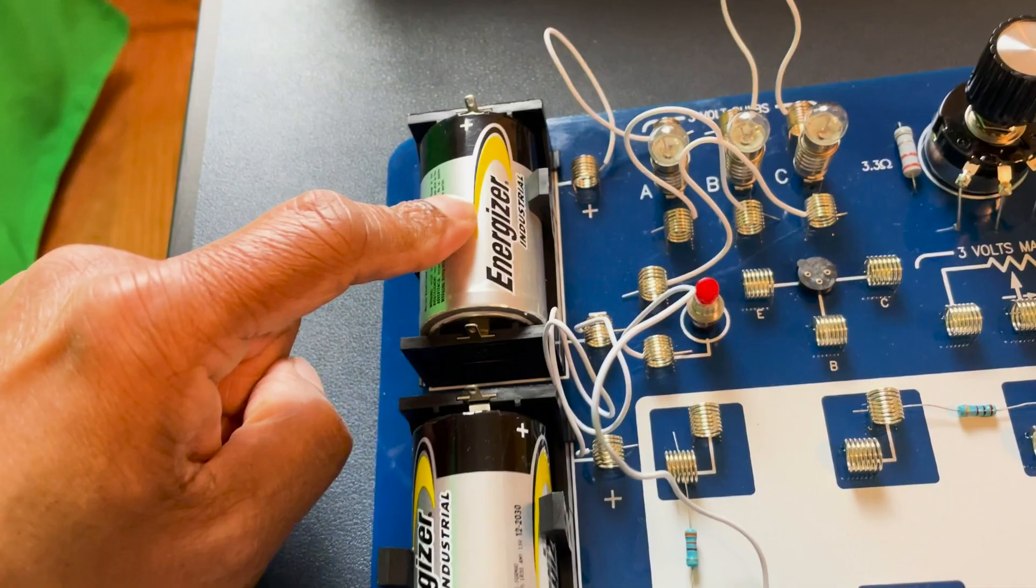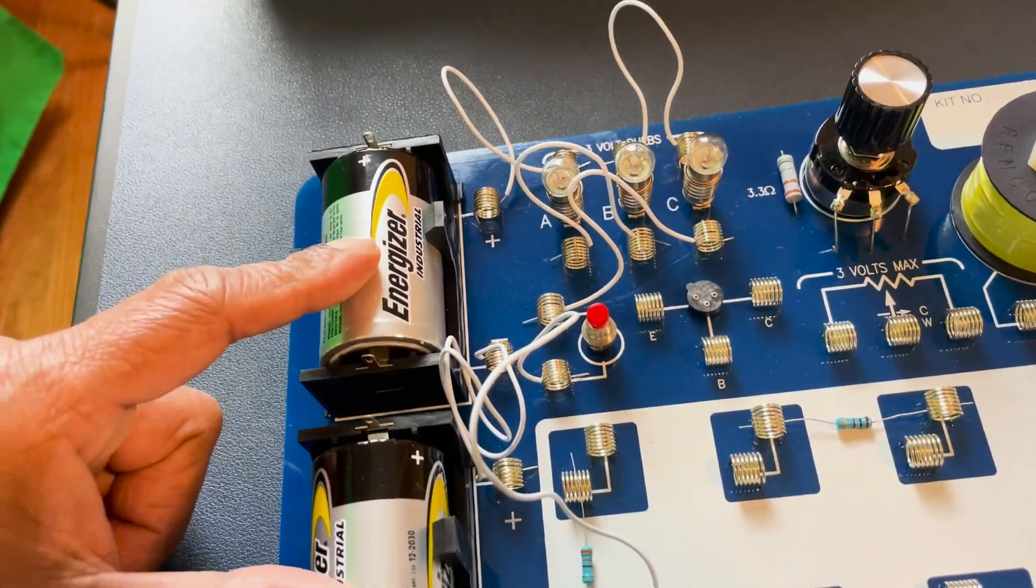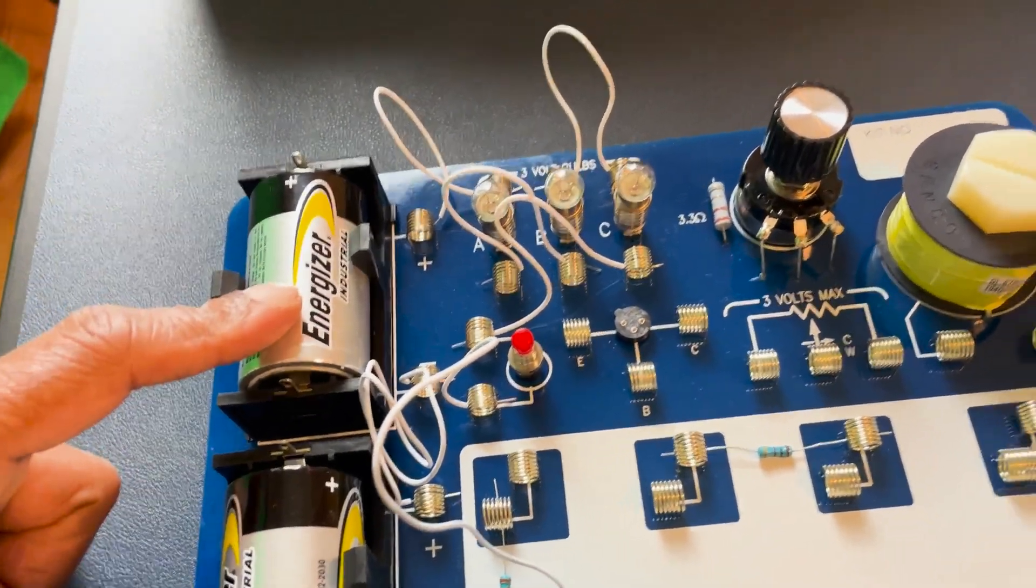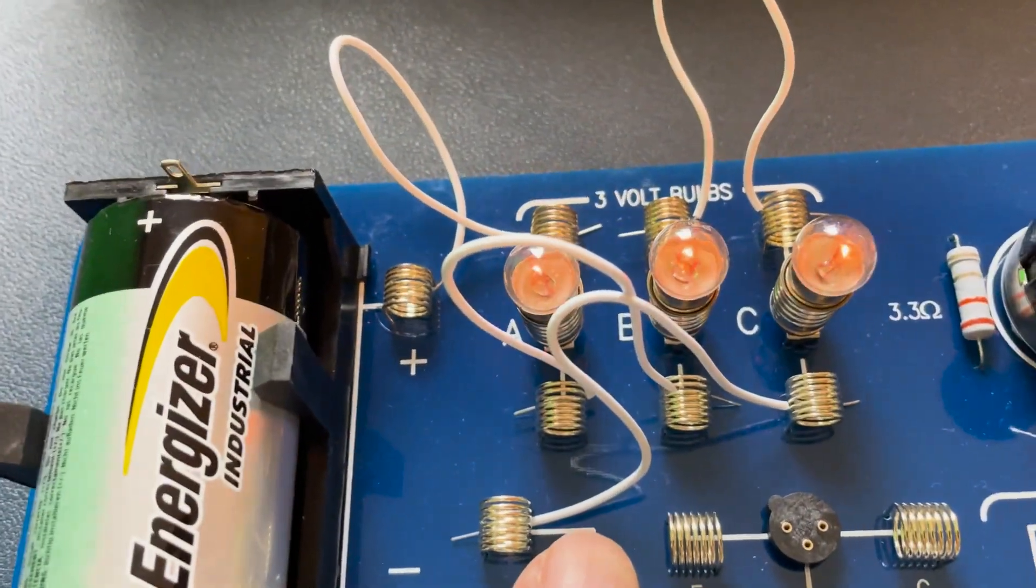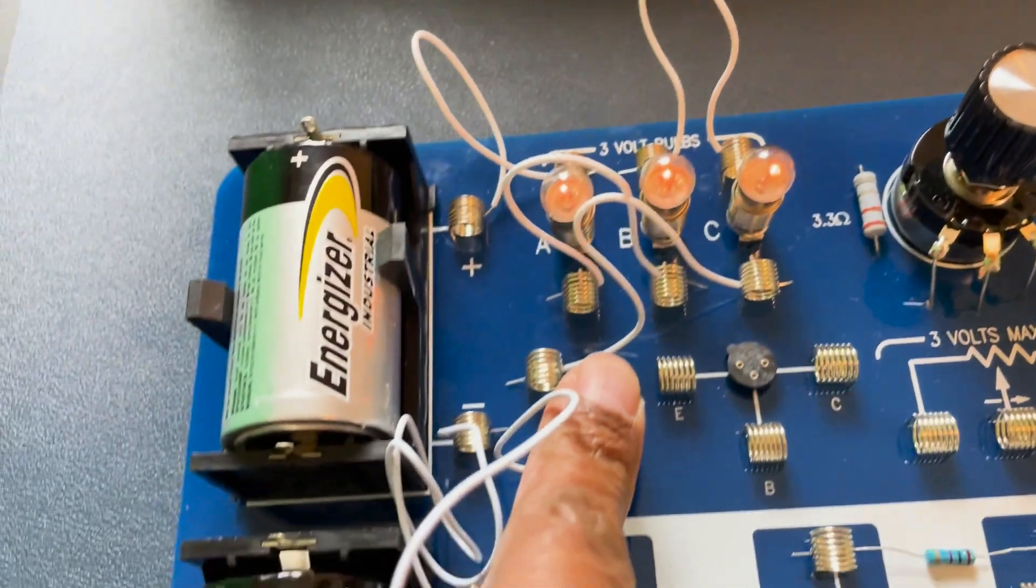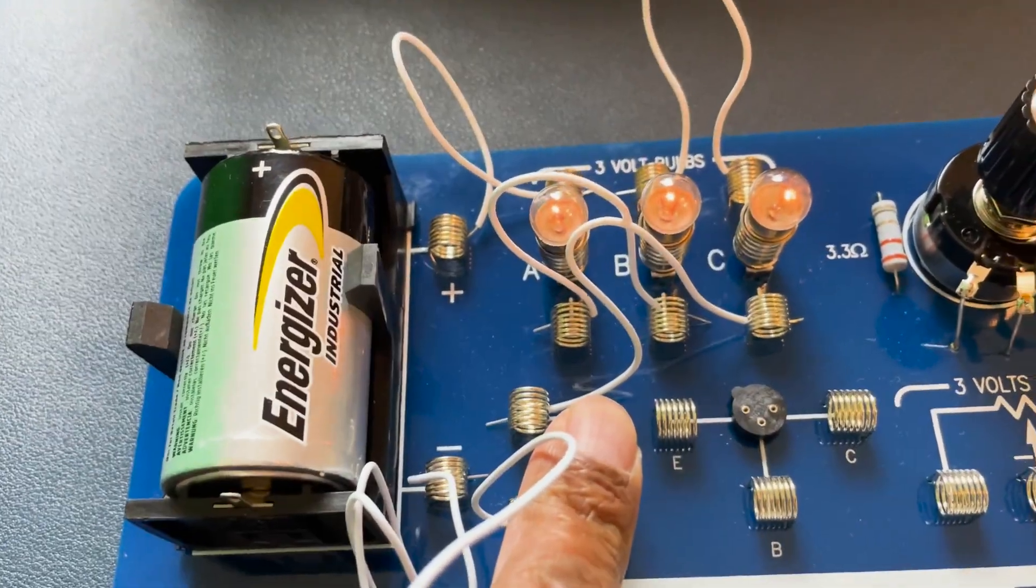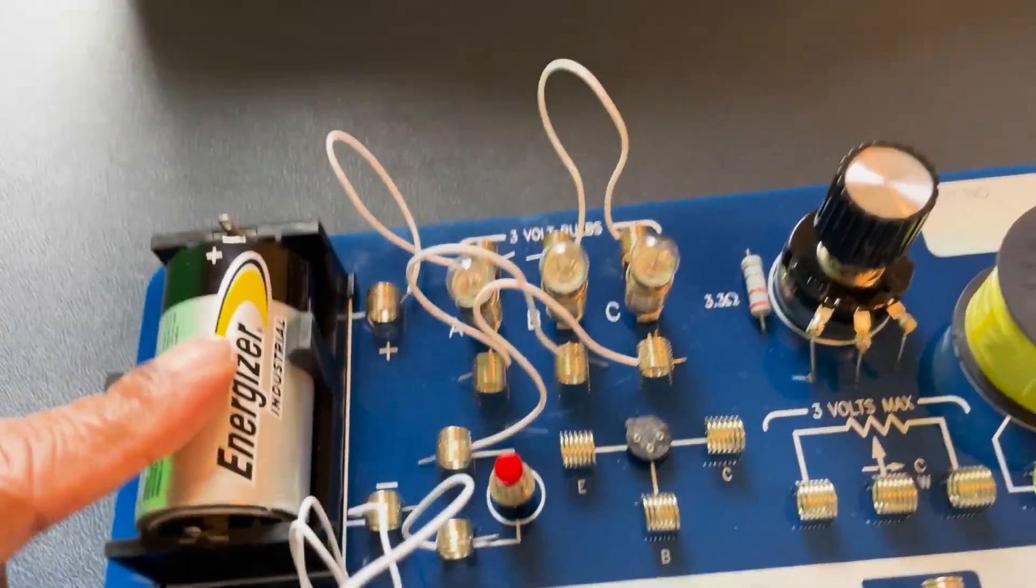Each one is 1.5 volts, so we're going to get an effective 3.0 volts. As a result, look what happens to the light bulbs when the switch is pressed down. Wow! They glow brighter because the cells are in series.